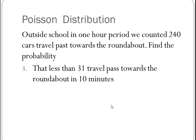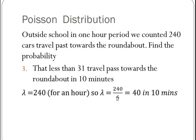Now, I've got outside school less than 31 cars travel past the roundabout in 10 minutes. So now I've got to change my lambda again. It's now in 10 minutes, so I'm going to divide it by 6, because there's 6 lots of 10 minutes in an hour, that's 40.